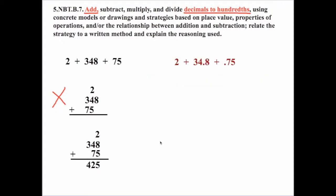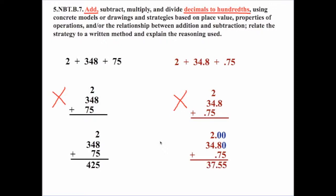Now let's use those same numerals but with decimals. For example: 2 plus 34 and 8 tenths plus 75 hundredths. When we put these vertically, just like with whole numbers, you can't place them anywhere you want. We line up the decimal points and fill in zeros for the different place values to compute the solution. Notice the idea of lining up decimal points — this isn't something brand new that applies only to decimals; it's the same concept as aligning whole numbers.